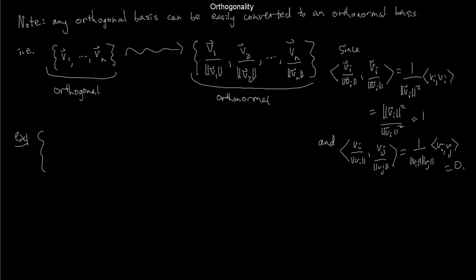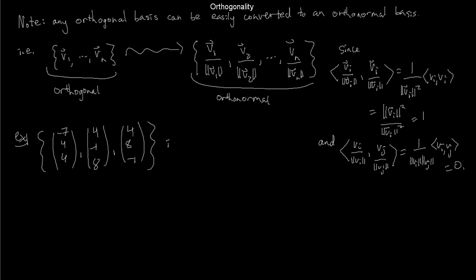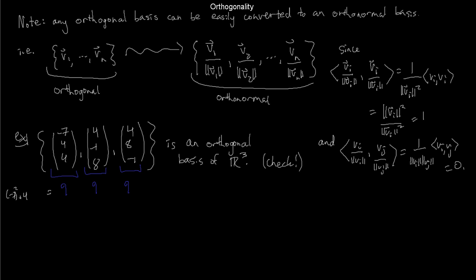Let's do a quick example. Suppose I have the following three vectors: (-7, 4, 4), (4, -1, 8), and (4, 8, -1). I claim these three vectors are mutually orthogonal — you should stop the video and check by taking the dot product of any pair. I claim they form an orthogonal basis of R³. The norm of all three vectors is 9: for the first, 49 + 16 + 16 = 81, and the square root is 9.